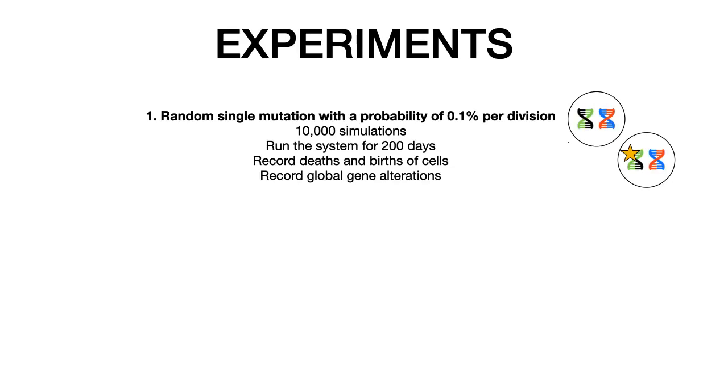To untangle the effects that these two errors have in homeostatic tissues, we performed the following experiments. During cell division, we mutated a random gene, permanently altering its function. This cell can then inherit this mutation to their progeny.